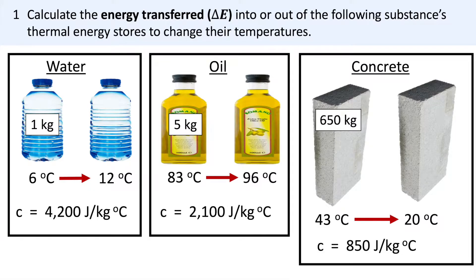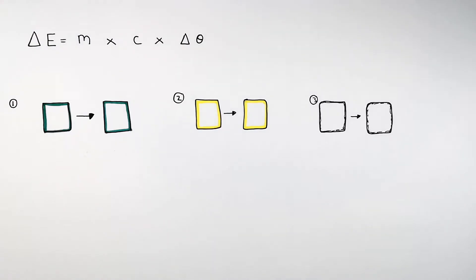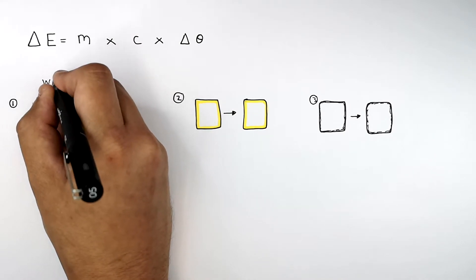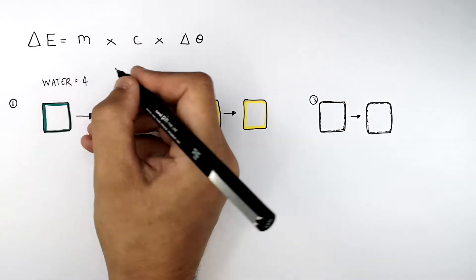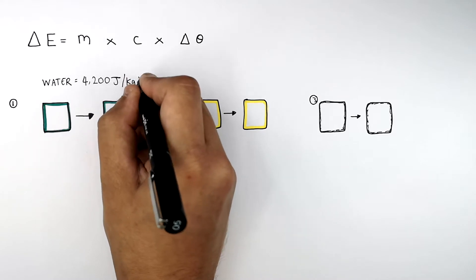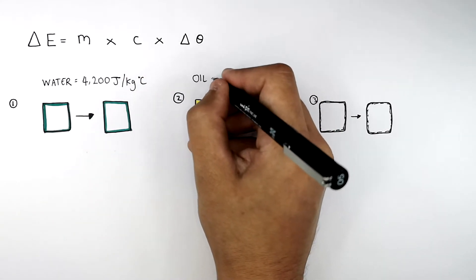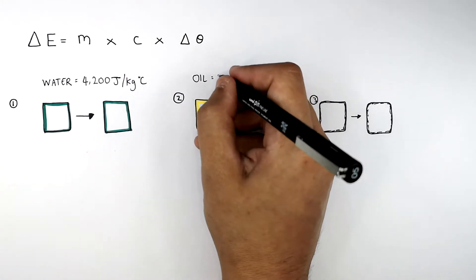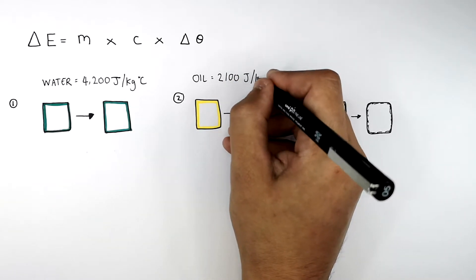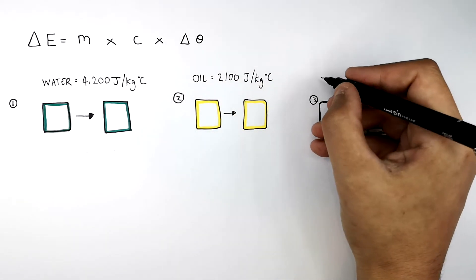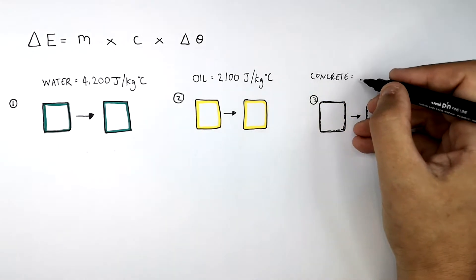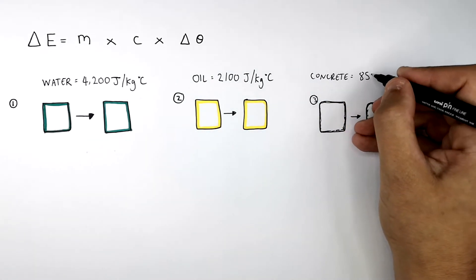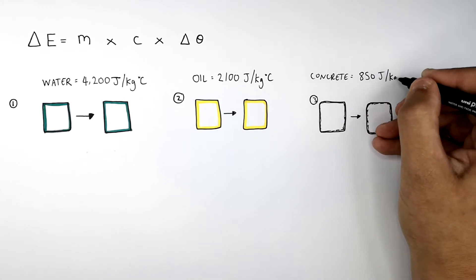Press pause to attempt the problem. The method and the answer will follow. We're going to work out the energy transferred into or out of the following objects. The first example is water with a specific heat capacity of 4200 joules per kilogram per degree Celsius. The second is cooking oil with a specific heat capacity of 2100 joules per kilogram per degree Celsius. The third is concrete with a specific heat capacity of 850 joules per kilogram per degree Celsius.